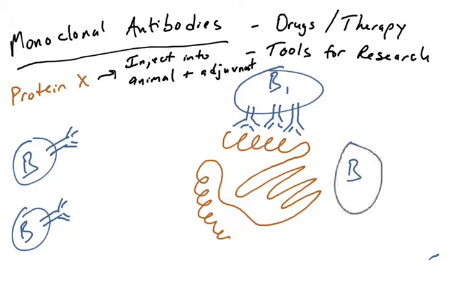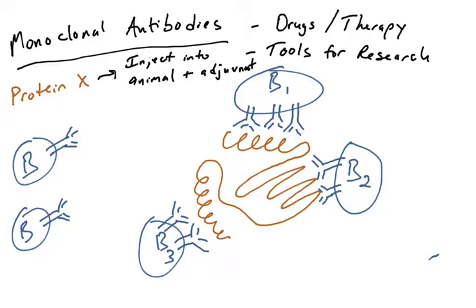Maybe another B cell has a different B cell receptor because of different VDJ recombination and junctional diversity, so it now binds the beta sheet epitope on the surface of this protein. And maybe a third B cell has an antigen binding site that binds a different alpha helix — the amino acids in that alpha helix differ from those in the first alpha helix. So B cells 1, 2, and 3 all activate and secrete antibodies that bind this protein. B cells 4 and 5 don't — they make antibodies against something else. This is the first step in generating monoclonal antibodies.